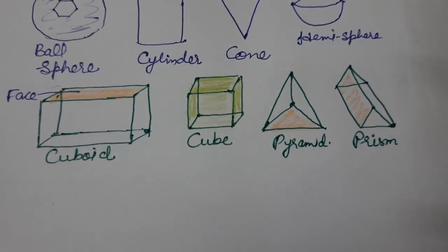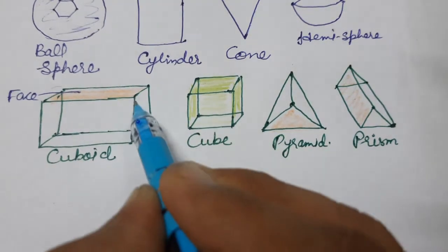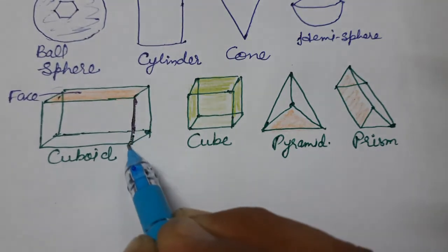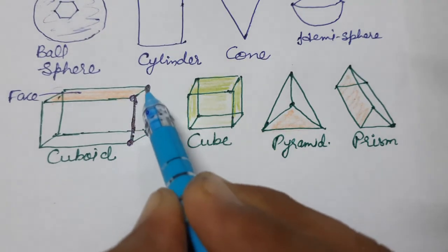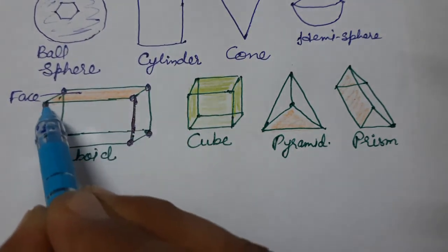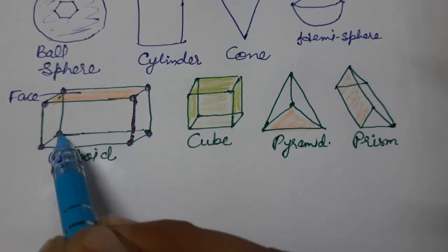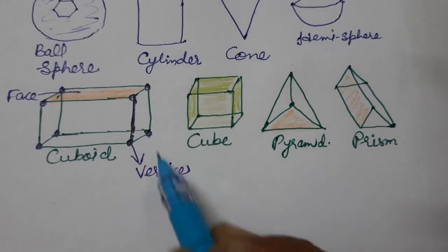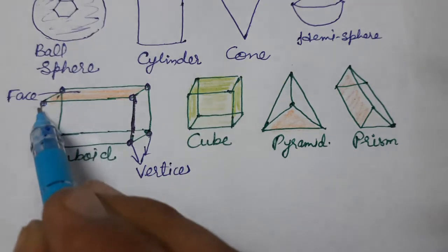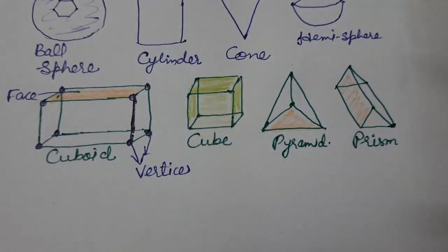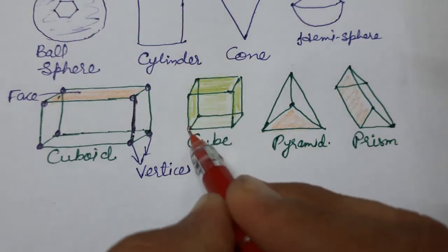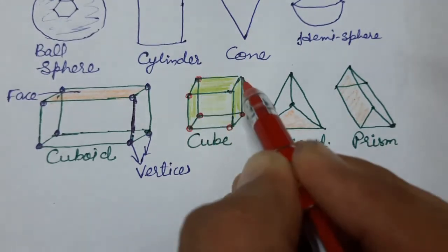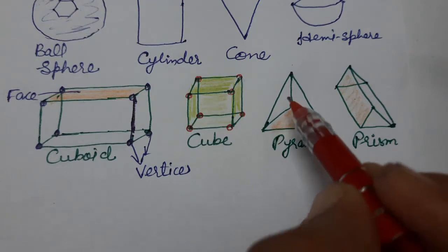Now the next concept is edges. A line segment joining two vertices is called an edge. The plural of vertex is vertices. So the corners of a shape are called vertices. In a cuboid, you can count the vertices: one, two, three, four, five, six, seven, and eight vertices.